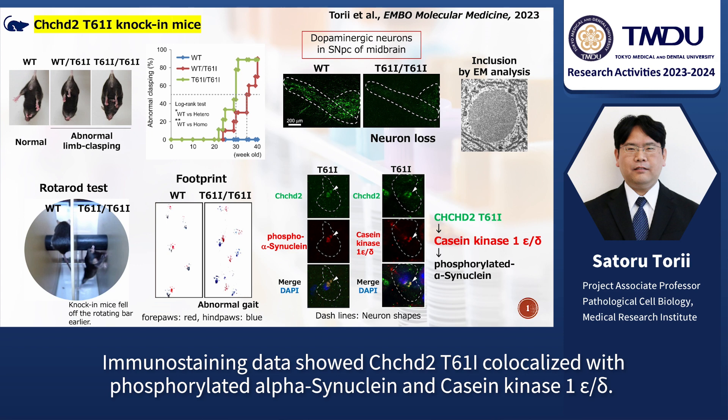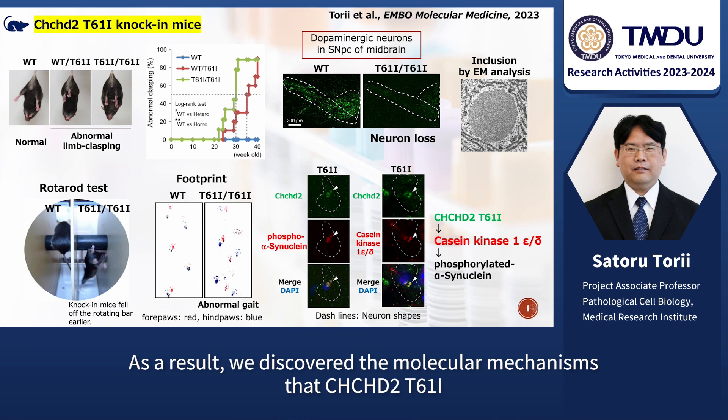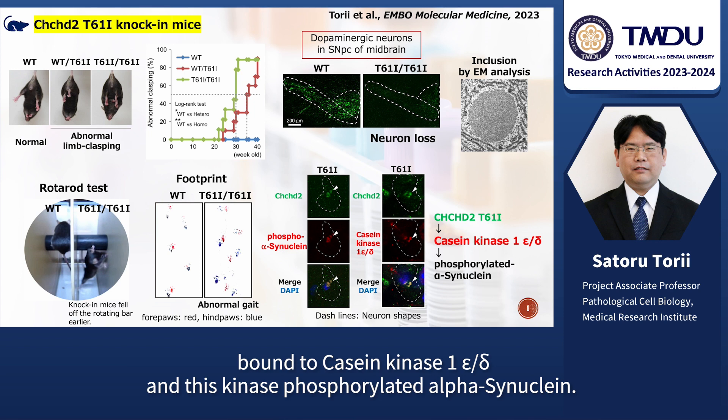Immunostaining data showed CHCHD2-T61I co-localized with phosphorylated alpha-synuclein and casein kinase-1-epsilon delta. As a result, we discovered the molecular mechanism by which CHCHD2-T61I binds to casein kinase-1-epsilon delta, and this kinase phosphorylates alpha-synuclein.